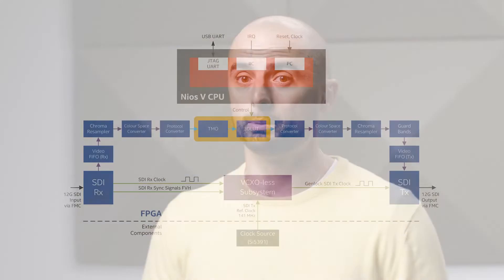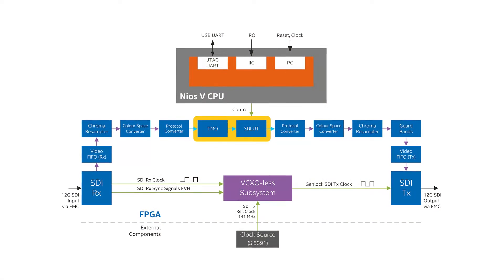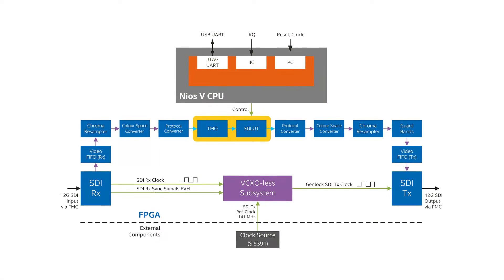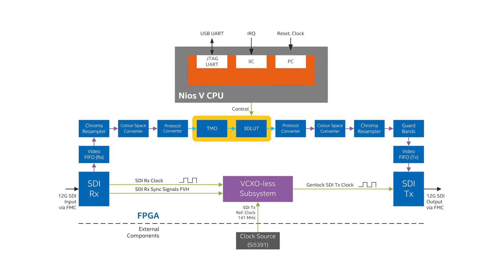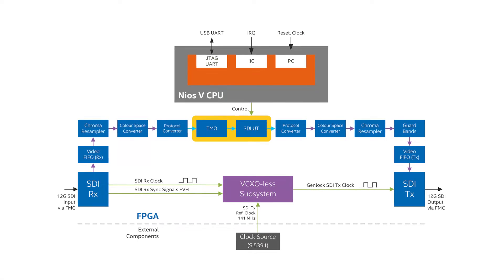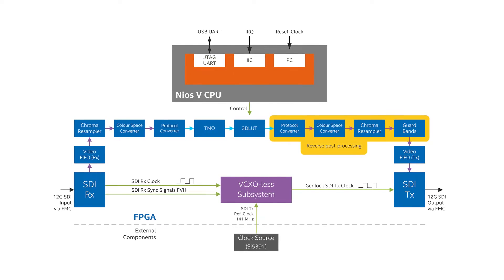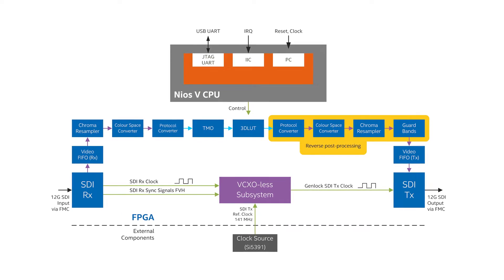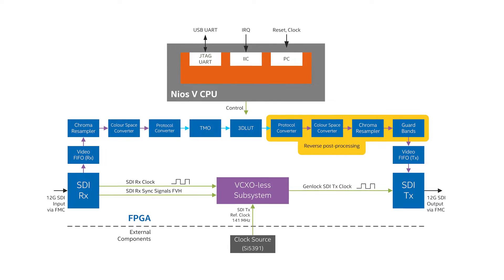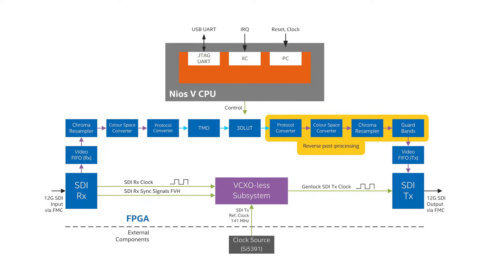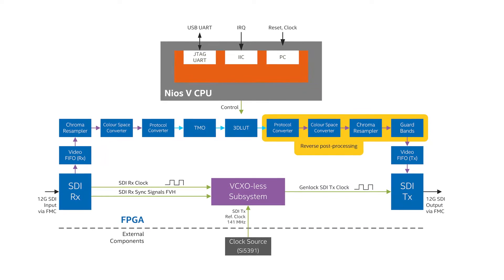The 3D lookup table and tone mapping IP cores process the video stream in real time without buffering. The stream is converted back from the light to full variant of the Intel FPGA video streaming protocol before being output via SDI to a receiving device.